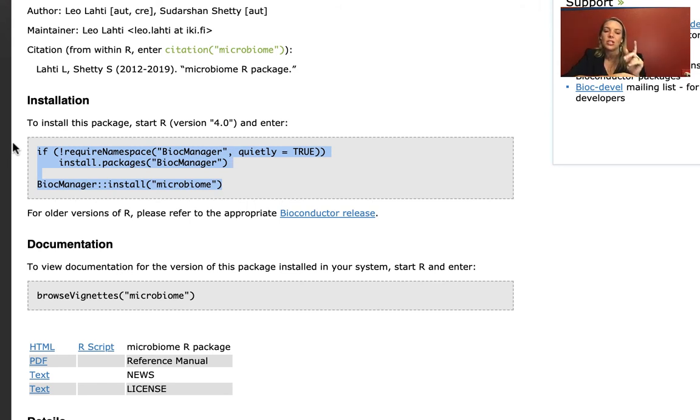It might ask you if you want to update some packages. You can type A for all of them. And then it often will give you the option of whether you want to build from source or just use binaries. For what you're working on in this class, it's going to be fine in most cases just to use the binaries. That might be a little bit quicker and require less setup on your computer.